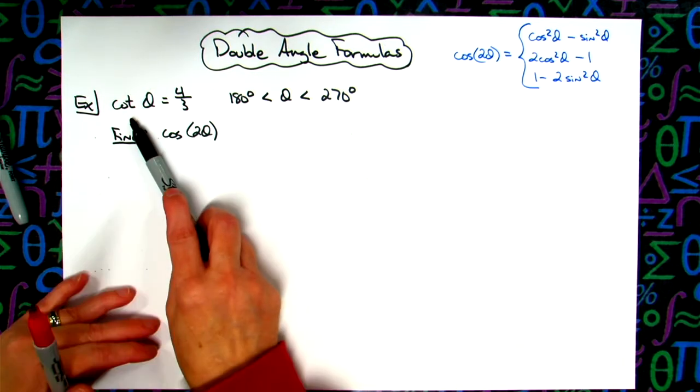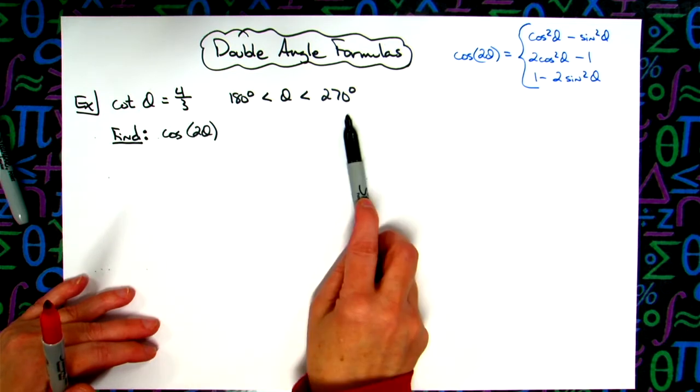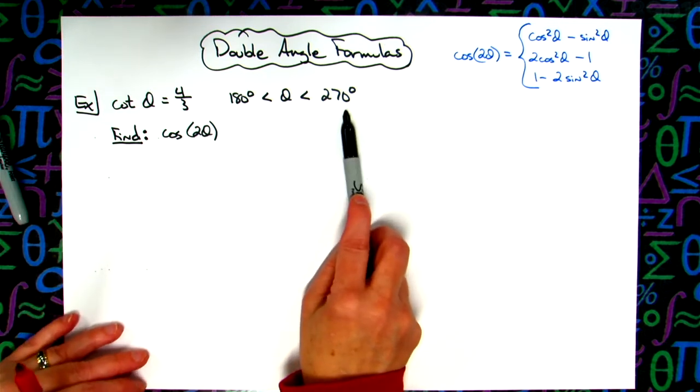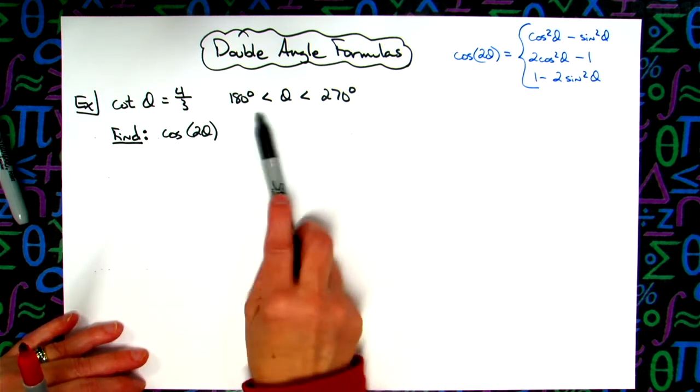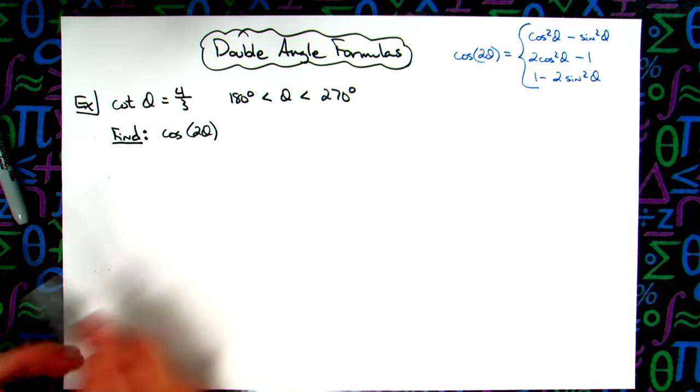So we're given here the cotangent of θ is 4/3 and θ is between 180 degrees and 270 degrees, which puts us there in that third quadrant. They're asking us to find the cosine of 2θ.